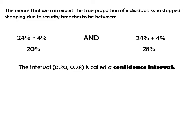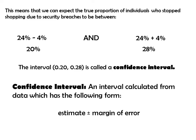A confidence interval has the following form: we use our estimate and then add and subtract our margin of error. This gives us a plausible interval in which we believe the true population parameter is contained. Our estimate was 24%; subtract the margin of error of 4% to get a lower bound of 20%. Add the margin of error to get an upper bound of 28%. So we believe the actual proportion of individuals who stopped shopping due to security breaches is between 20% and 28%.